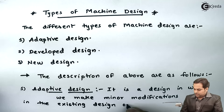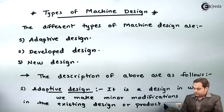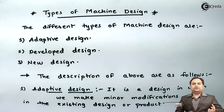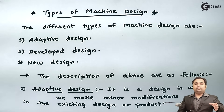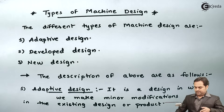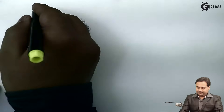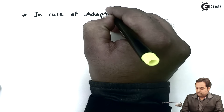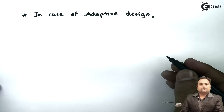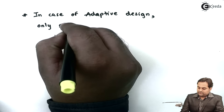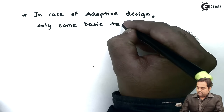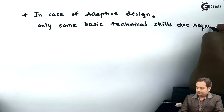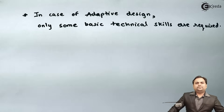In simple terms, adaptive design is not a new design; we are not designing any product from scratch. Some product is already there and we just change it or provide some minor modifications. For example, if we are just changing a product's color, or adding or removing a component, that is called adaptive design. In adaptive design, only some basic technical skills are required.